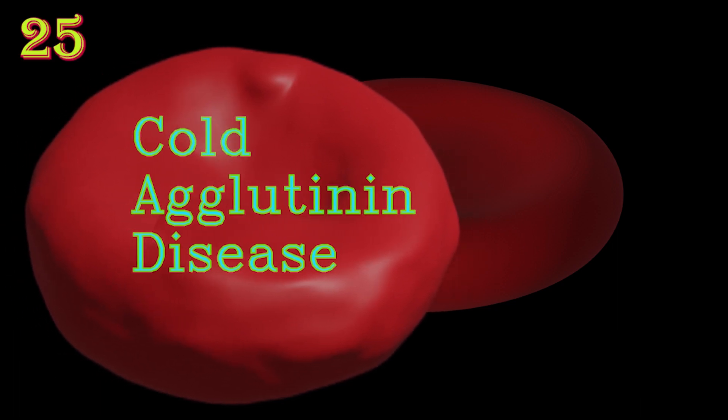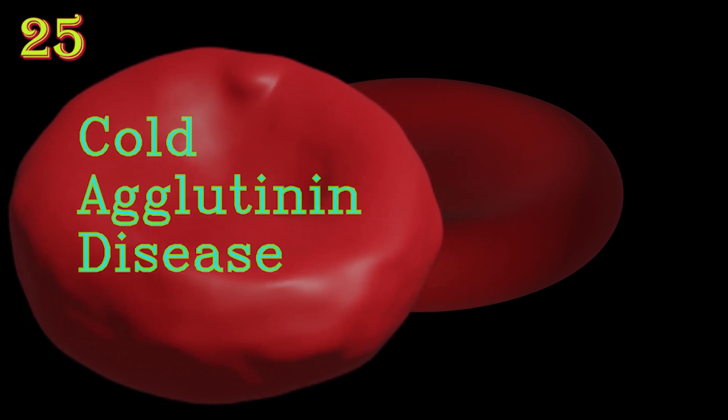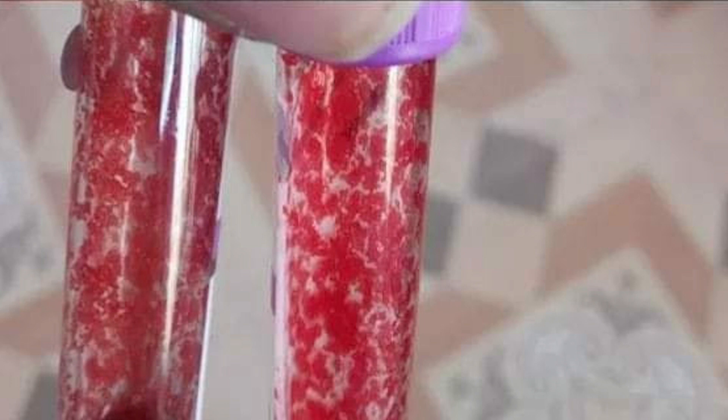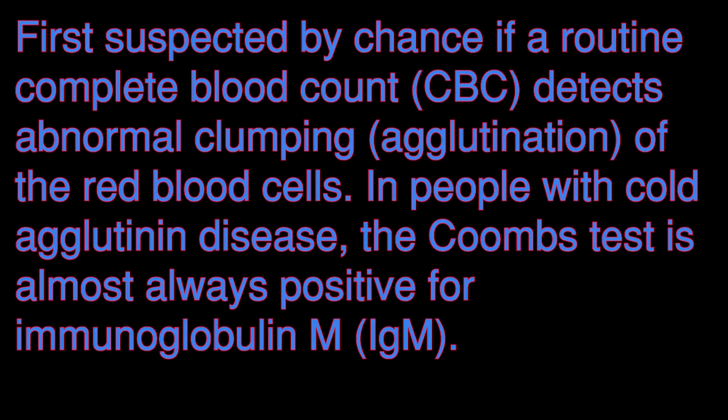Cold agglutinin disease is a rare autoimmune disease, usually involving circulating IgM cold-sensitive antibodies that are active at below 30°C (86°F), directed against RBCs, causing them to agglutinate and undergo hemolysis.